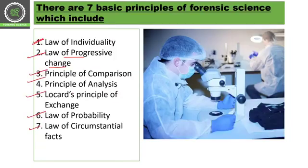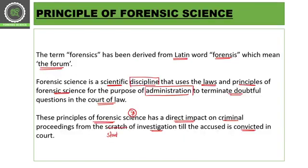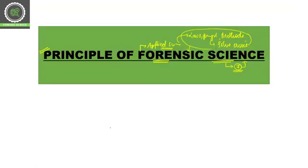So these are the seven laws of forensic science: law of individuality, progressive change, comparison, analysis, exchange principle, law of probability, and law of circumstantial facts. I hope this lecture is helpful to everyone. Thank you so much for watching.